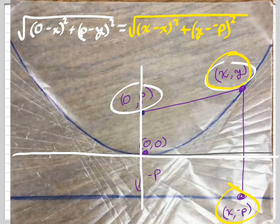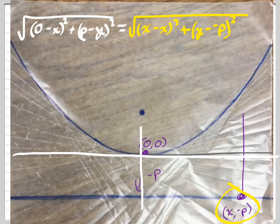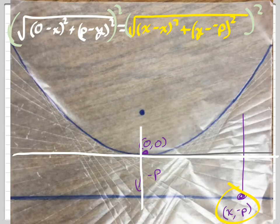All right, you guys ready? We're going to do some math now. We're going to simplify this a little bit. All right. All right, so the first thing I'm going to do is I'm going to square both sides. We're going to square this side, and we're going to square this side, which will be nice because it gets rid of the square root signs, right?